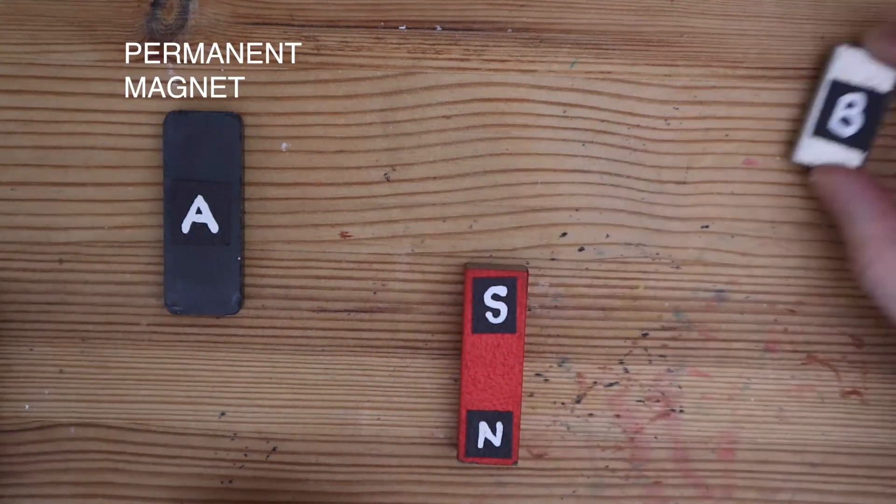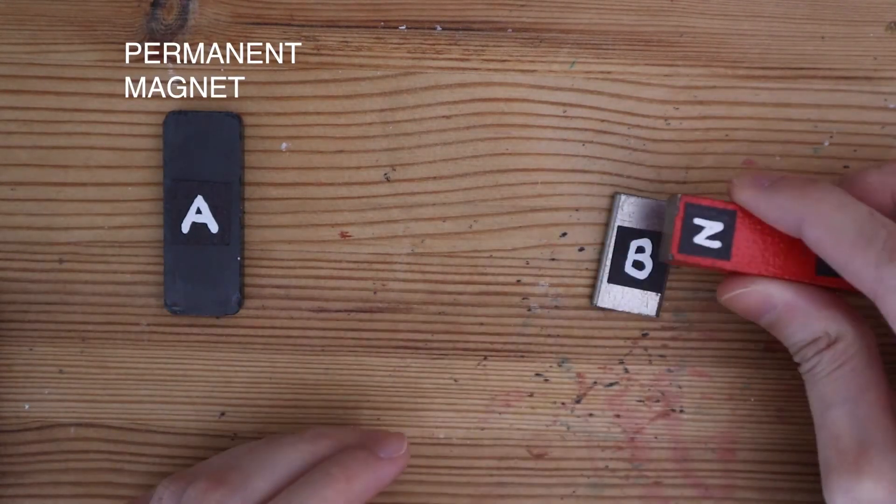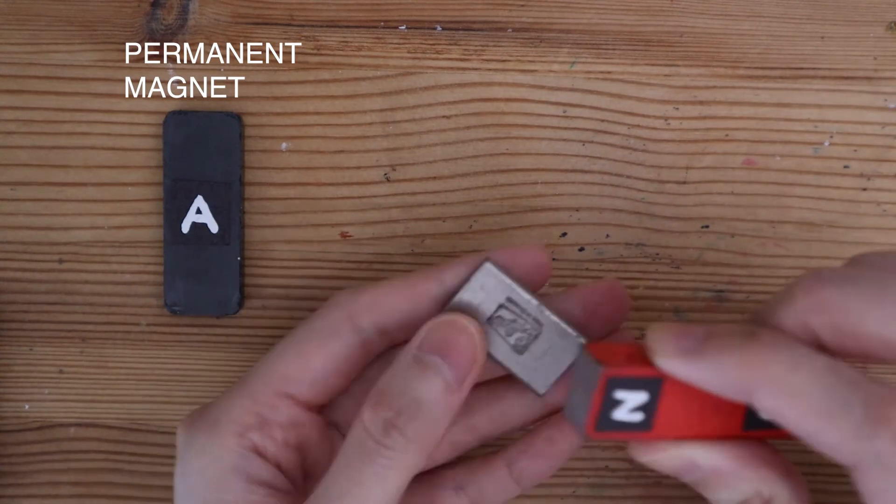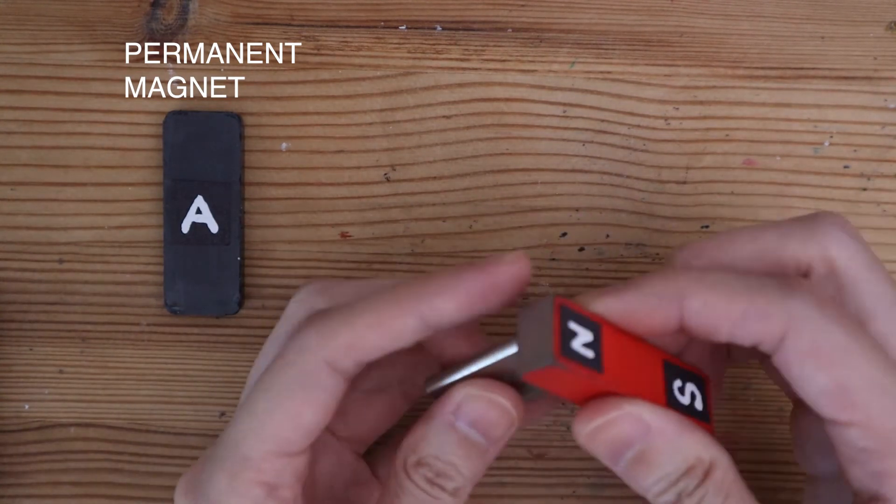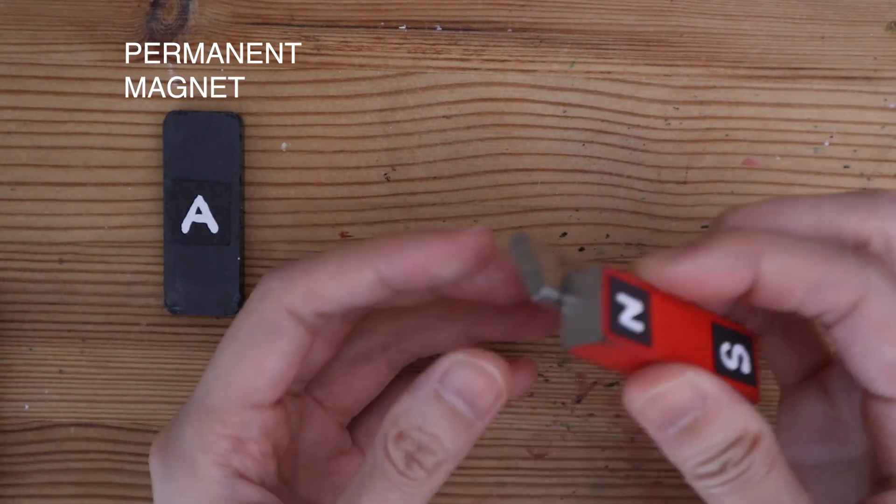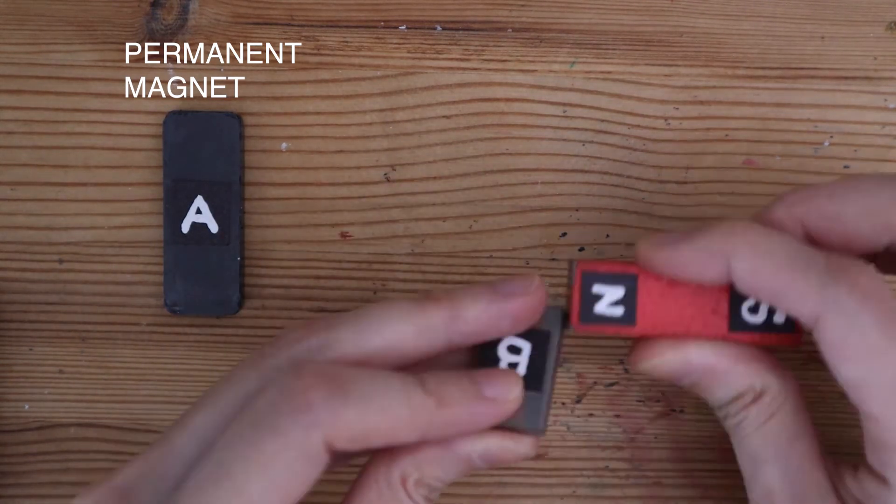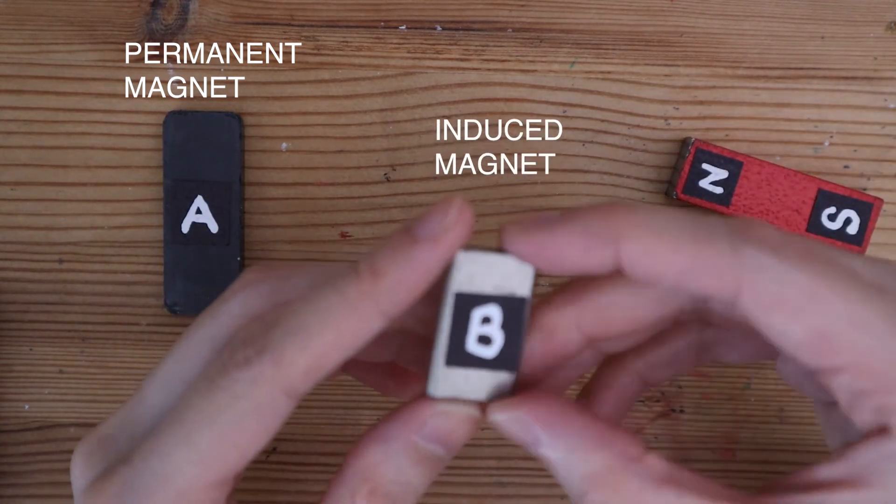Let's also test object B just to make sure we got this right. An induced magnet can only attract. And it seems like all the sides of this object can only attract. Therefore, object B must be the induced magnet.